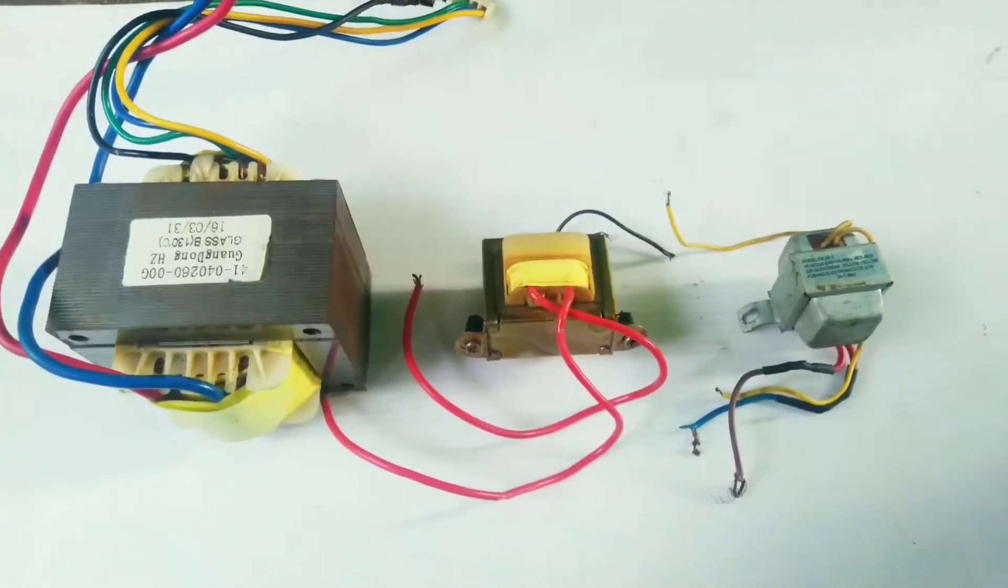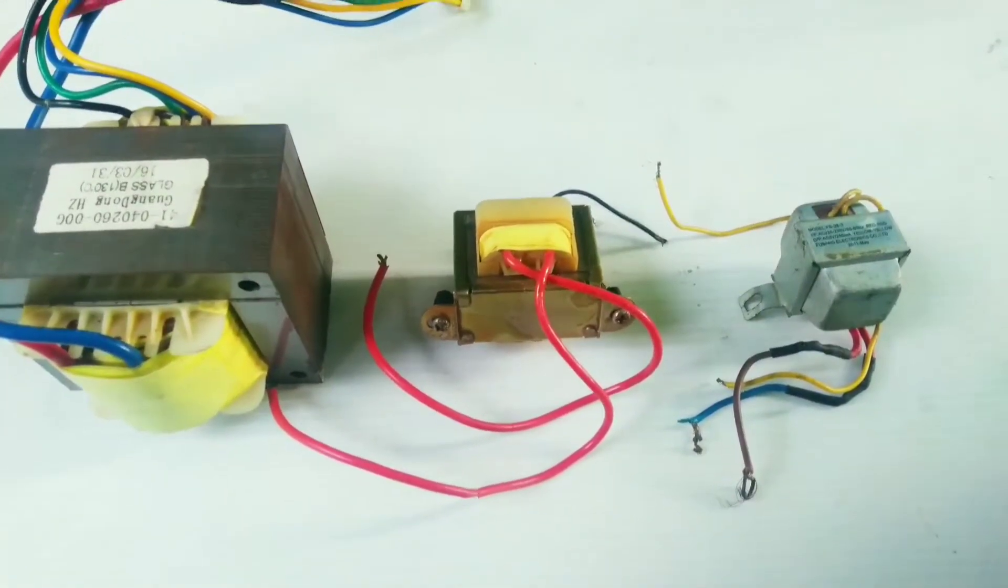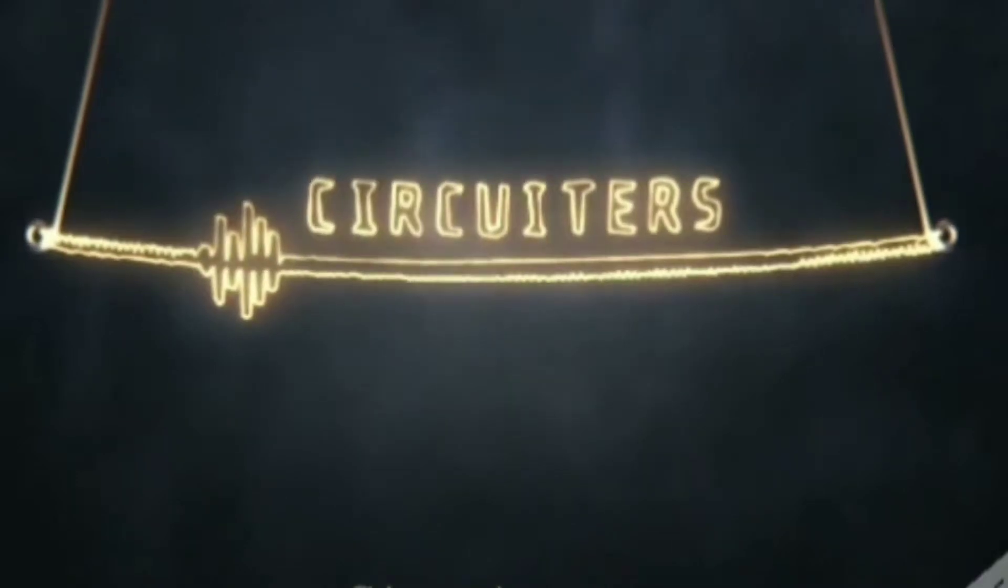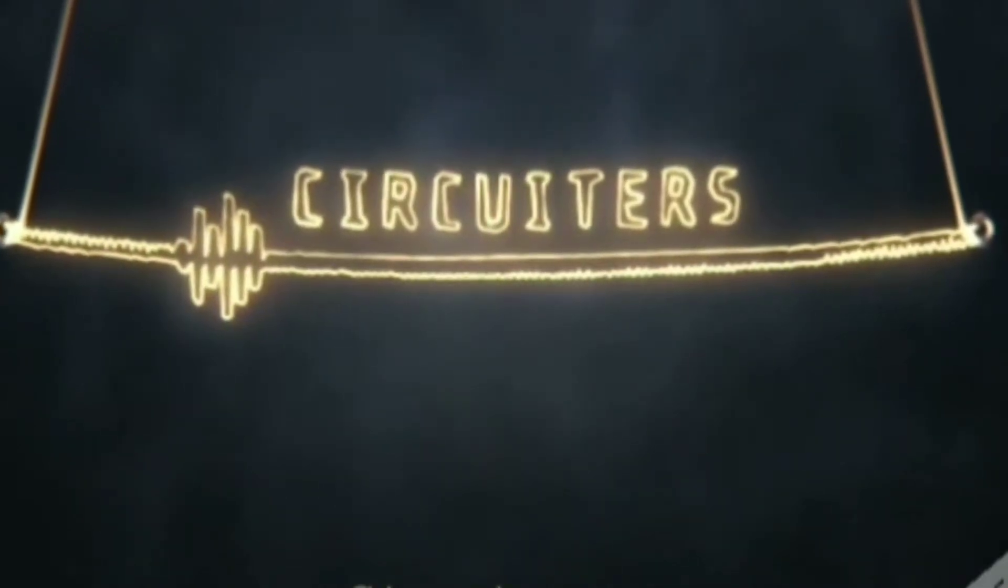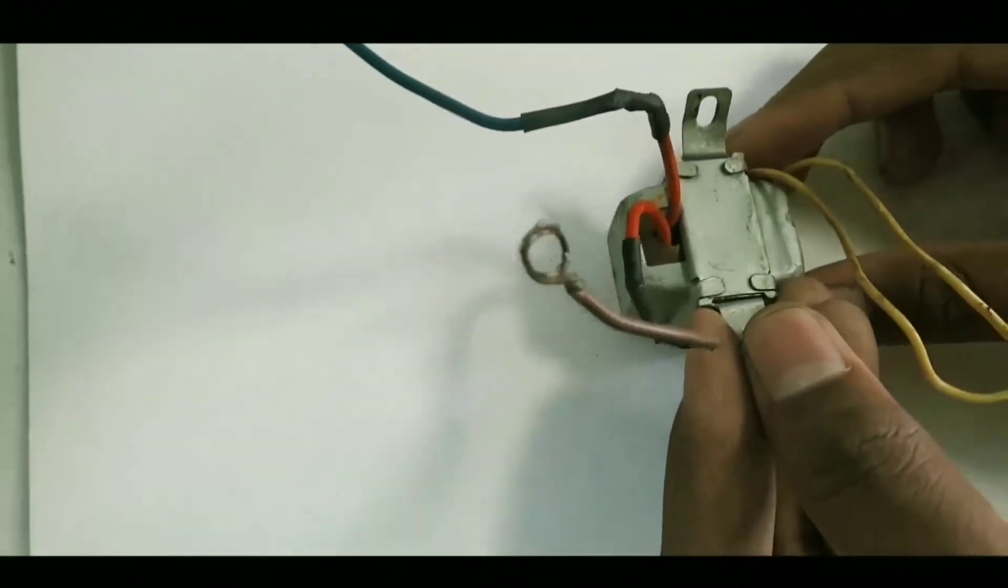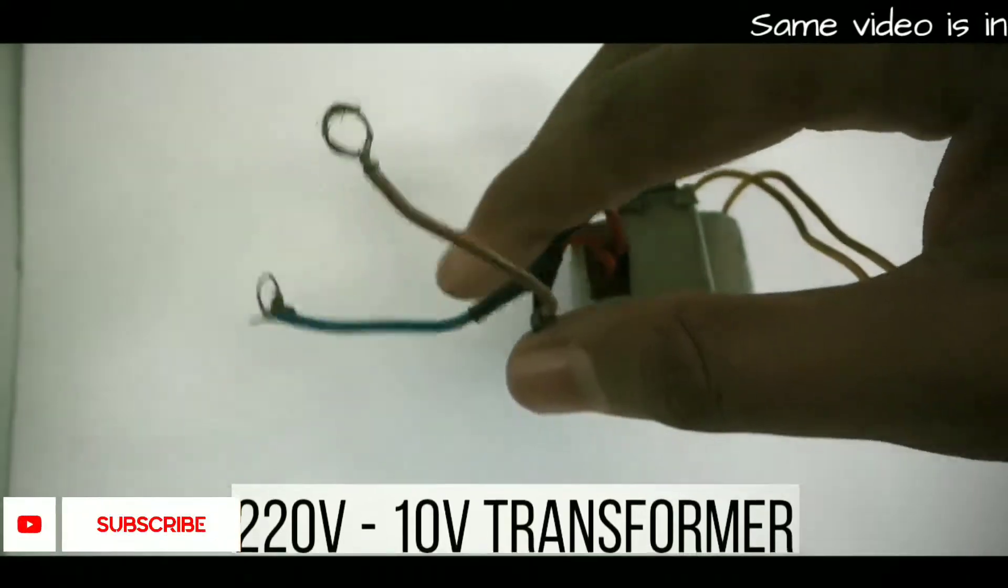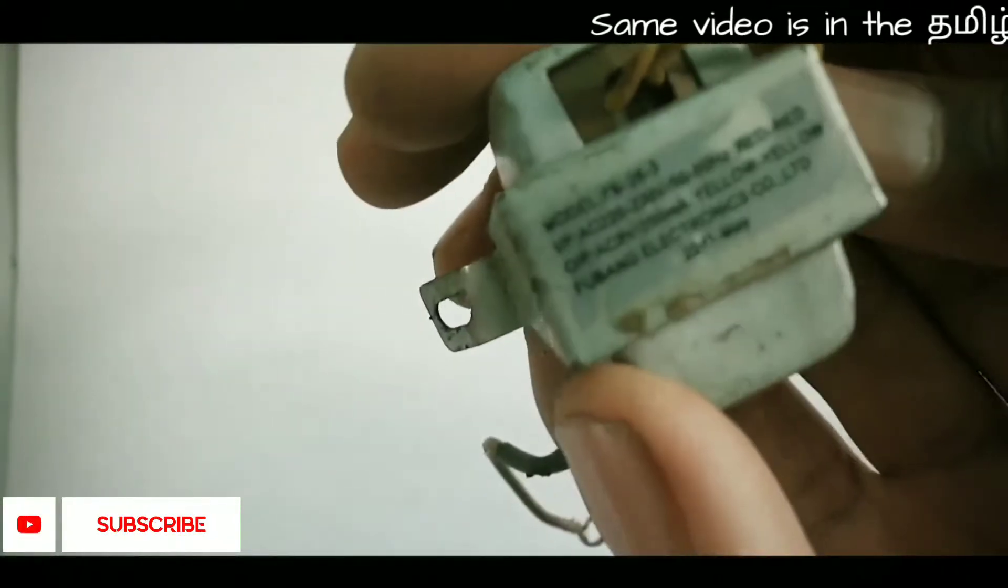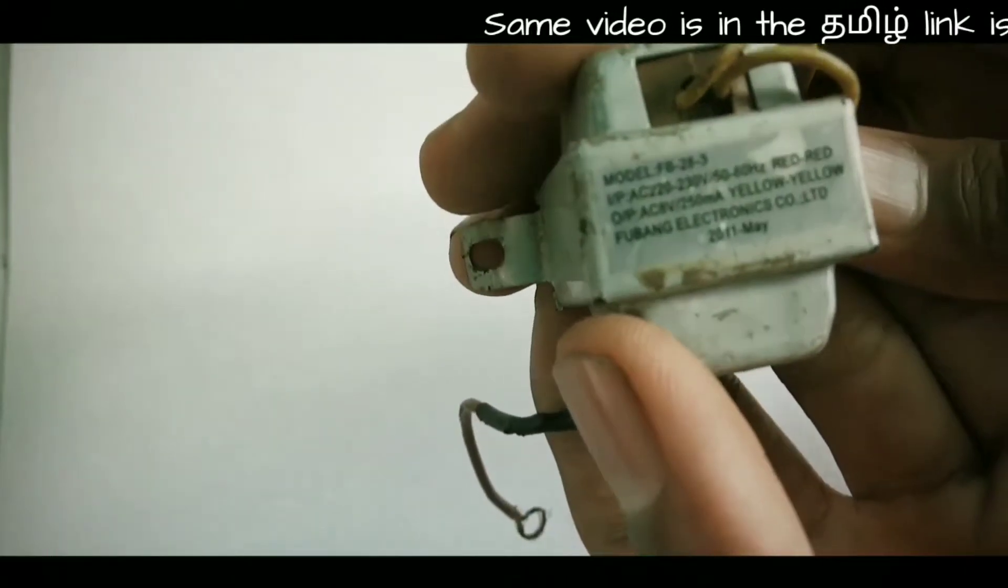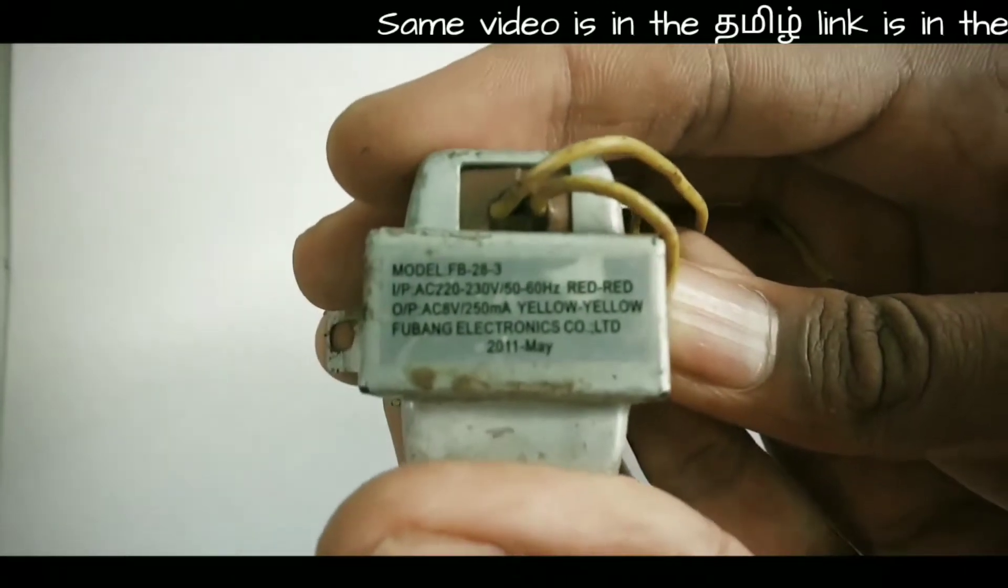Hi guys, in this video we're going to find which transformer is suitable for the inverter. We start with a small one, this is a 220 volt to 10 volt transformer. As it is a step-down transformer, we must interchange the primary and secondary windings, and then we can apply the load.